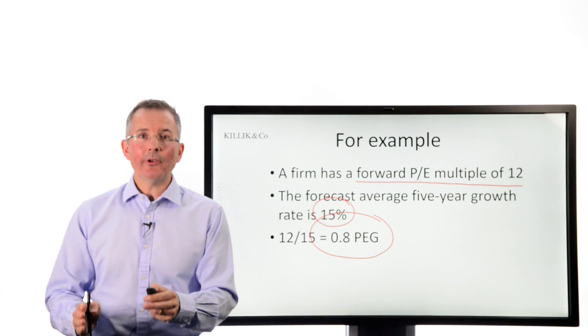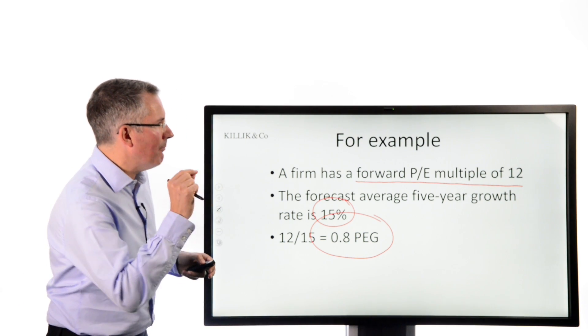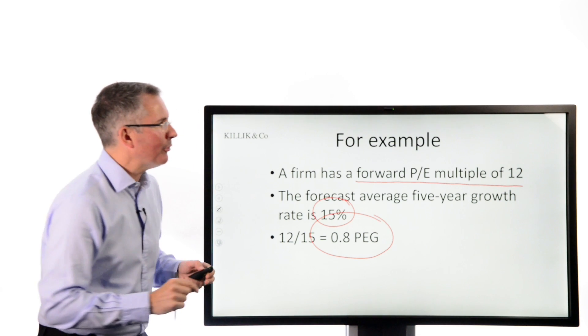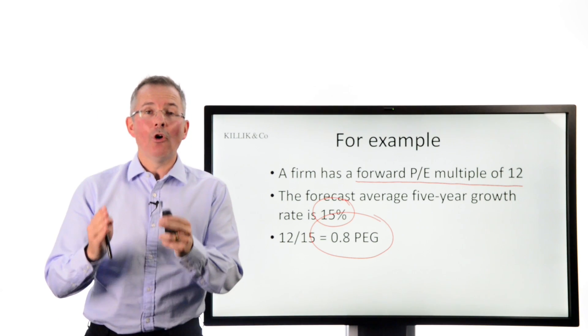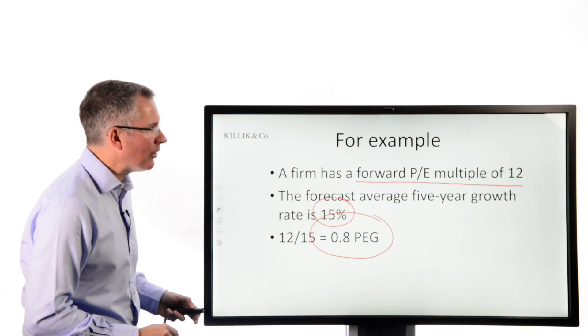And there are some people who would say, great, we're on the right tracks here. That's a PEG below 1. Or put it another way, you might expect the PE multiple to be near 15. It's not. It's only 12. So maybe we've got a bargain here. So that's where the PEG is trying to go.